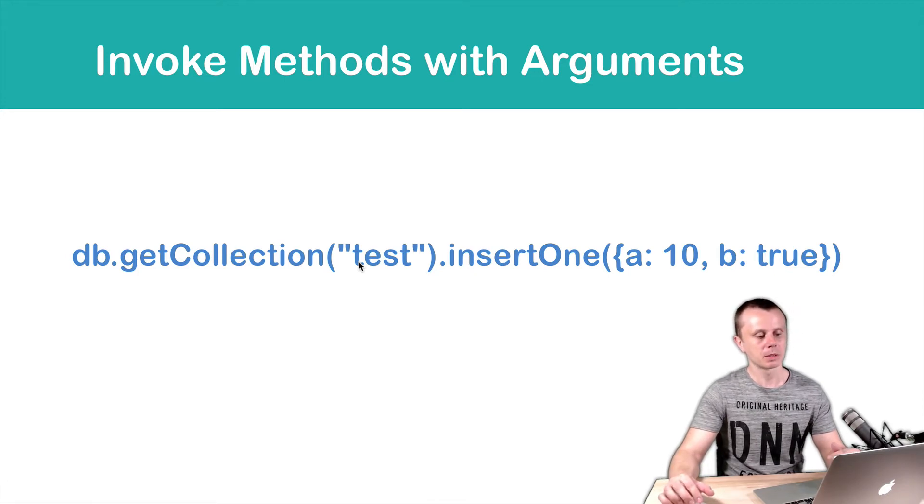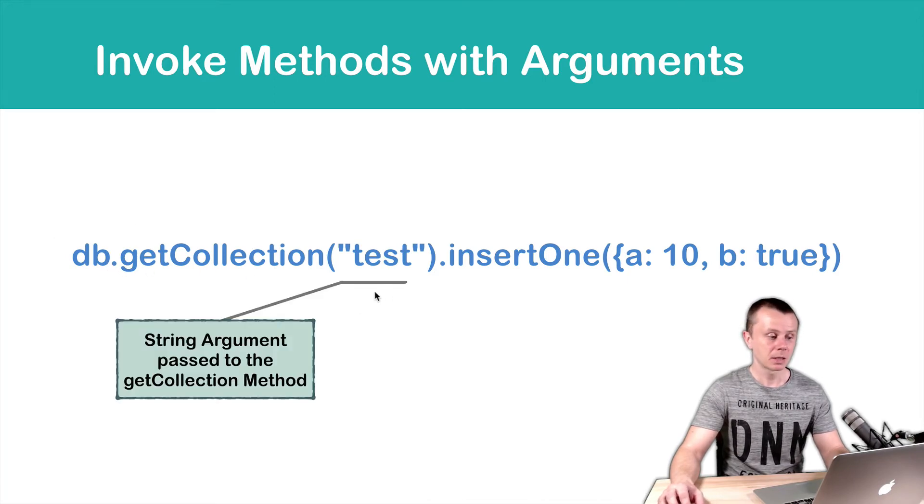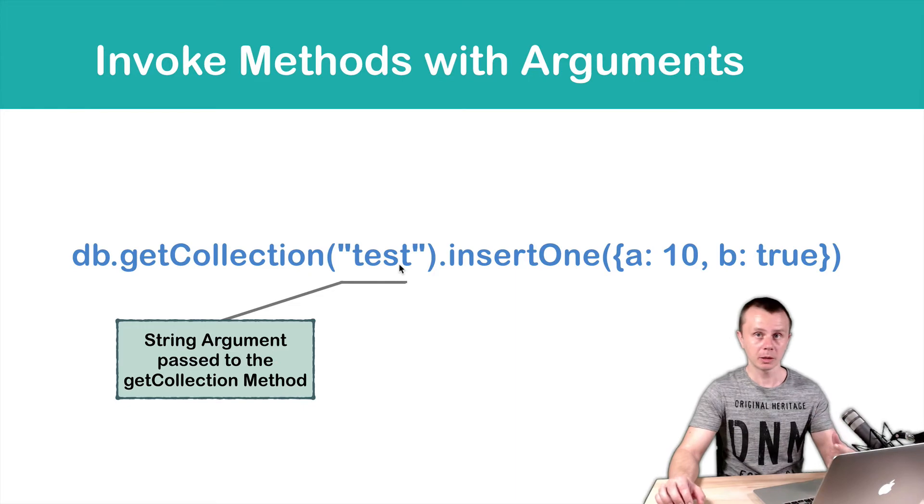But let's examine this command more deeply. You already know what DB is - DB is an object. Then we access the getCollection method of this object and we pass a string to this method. So 'test' is a string that is a single argument passed to the getCollection method.